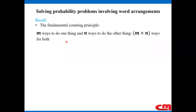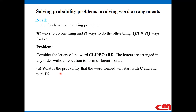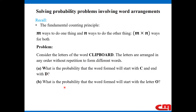Now let us look at the problem to solve. Consider the letters of the word 'clipboard.' The letters are arranged in any order without repetition to form different words. The question is: what is the probability that the word formed will start with C and end with D? The second question is: what is the probability that the word formed will start with the letter O?